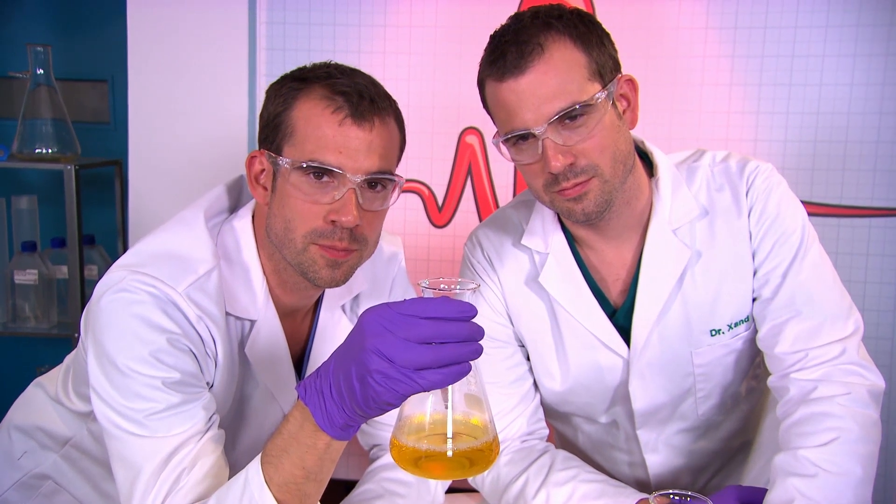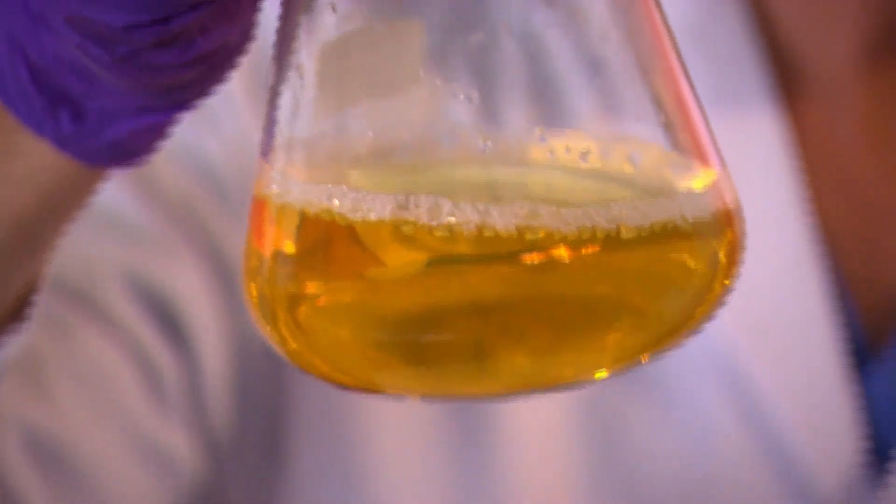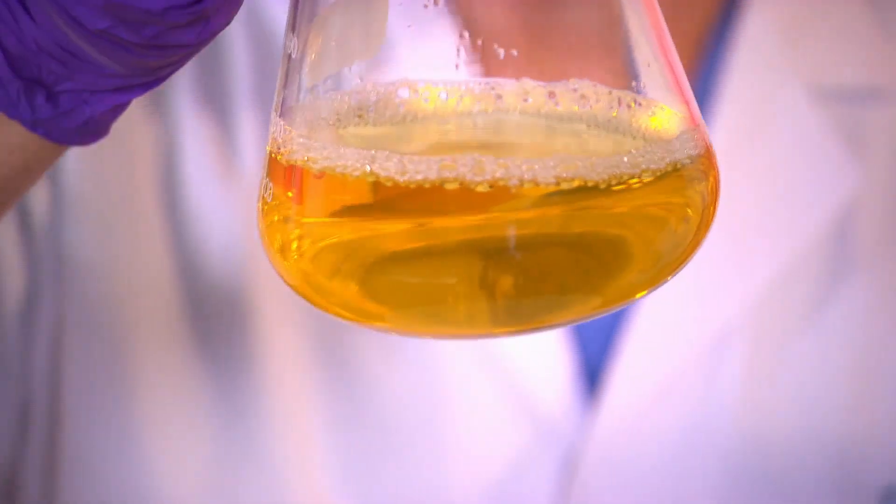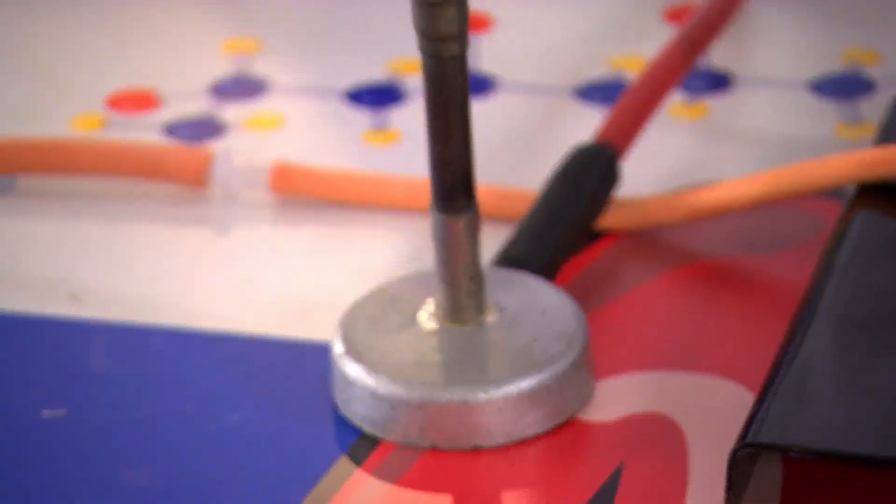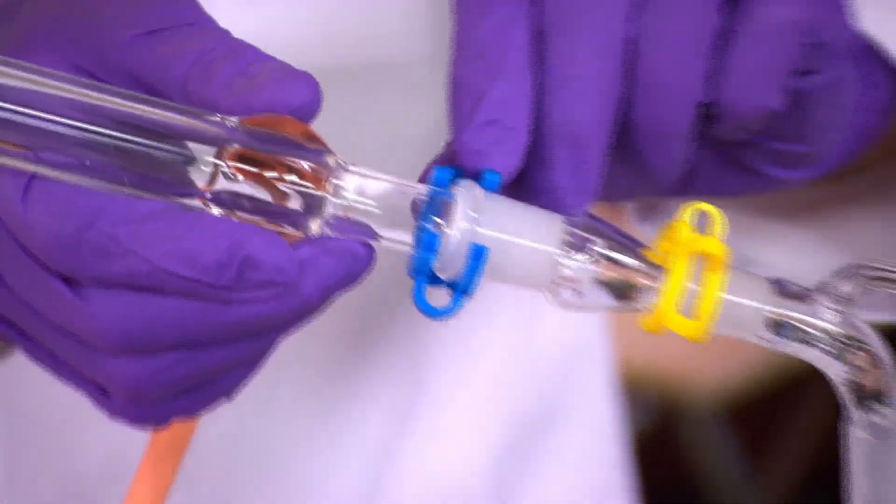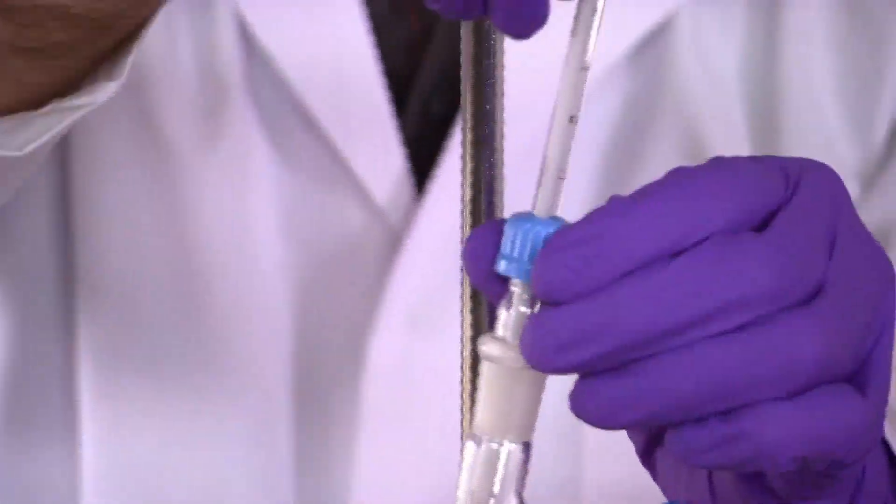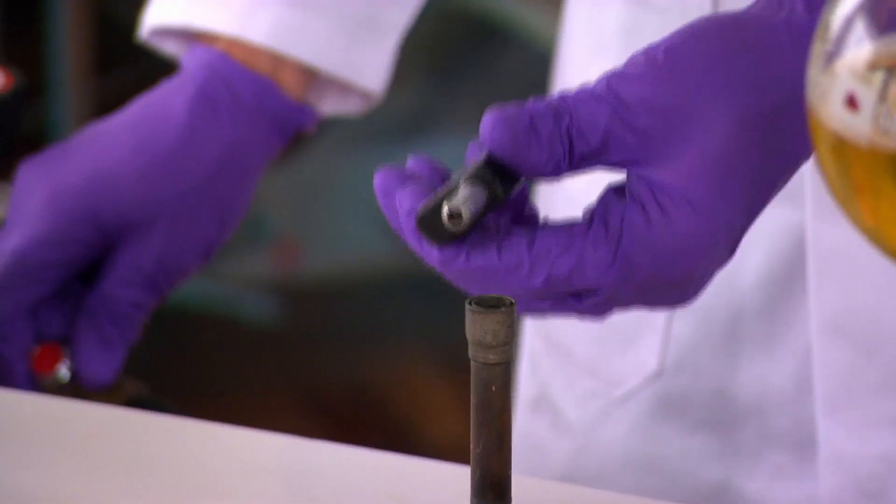Now we've got an experiment where we're going to separate the water from the toxins in Chris's urine. And then Chris is going to drink it. What? This may seem like a terrible idea, but Chris won't actually be drinking wee. He'll be drinking pure water extracted from it.